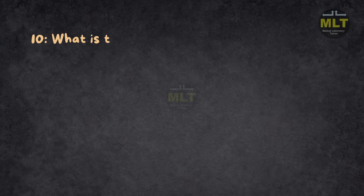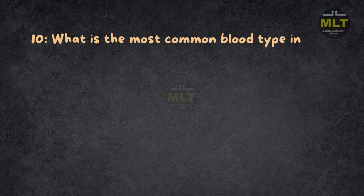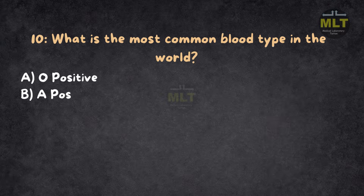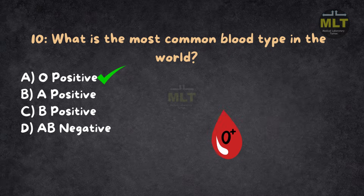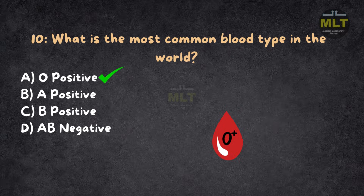Question 10: What is the most common blood type in the world? Option A: O positive. Option B: A positive. Option C: B positive. Option D: AB negative. Correct answer: A, O positive. O positive is the most common blood type globally, making it highly valuable for transfusions. AB negative is the least common blood type in the world.